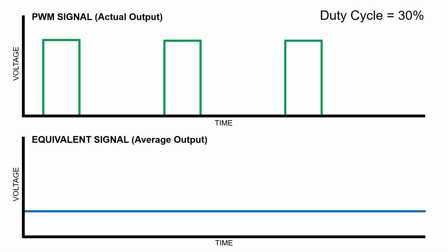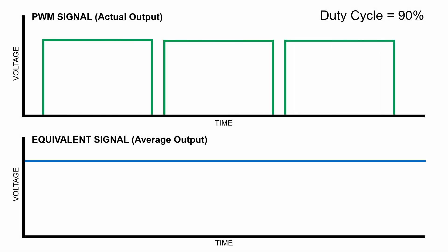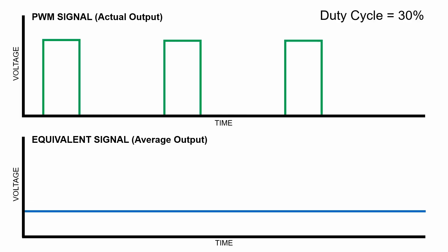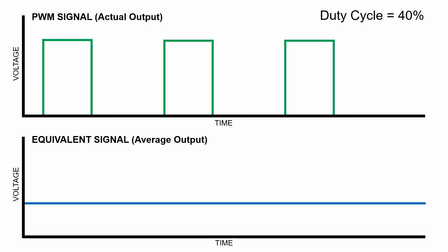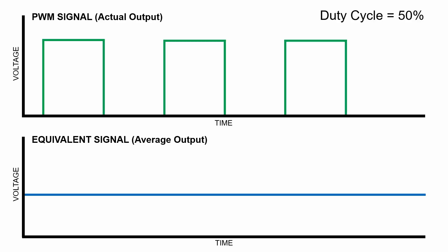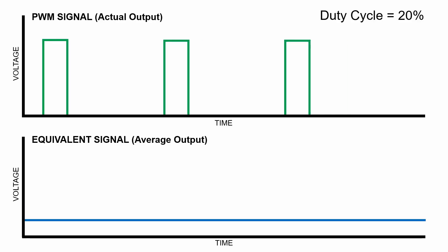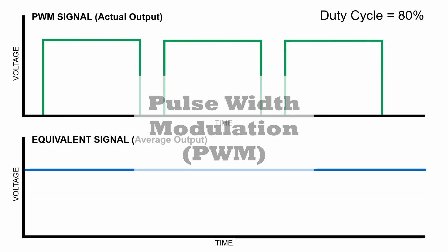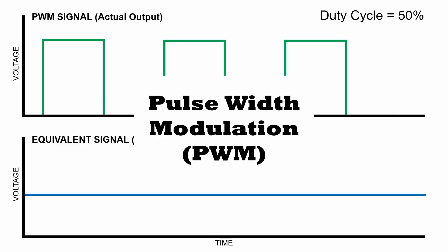The difference in charge and discharge time set by the potentiometer creates an adjustable output pulse width, which allows for controlling the average output power delivered to the load. This control technique is known as pulse width modulation, or PWM.